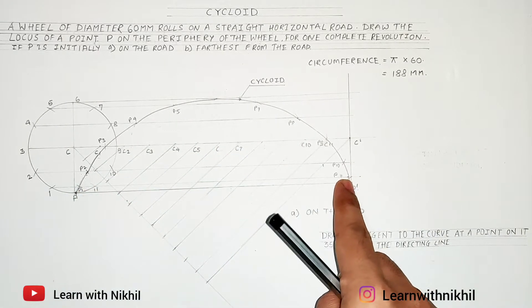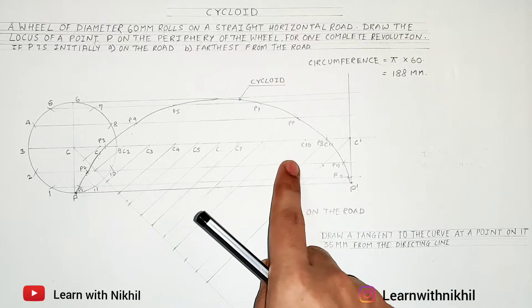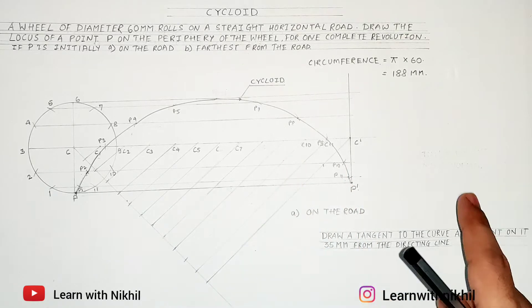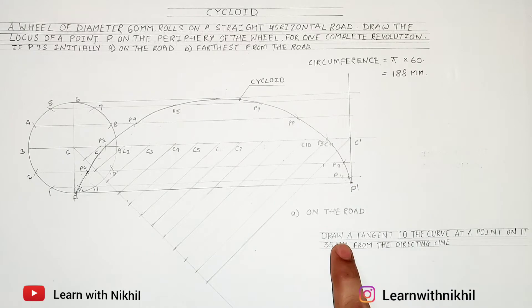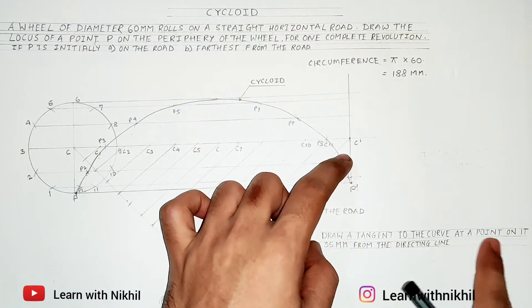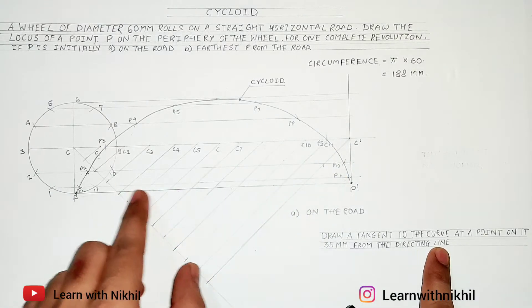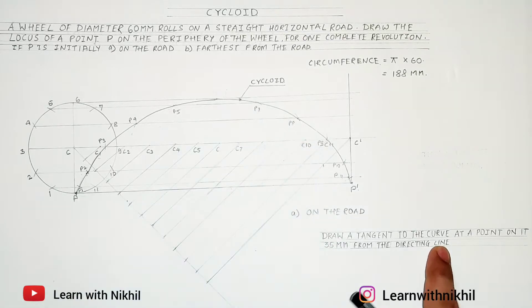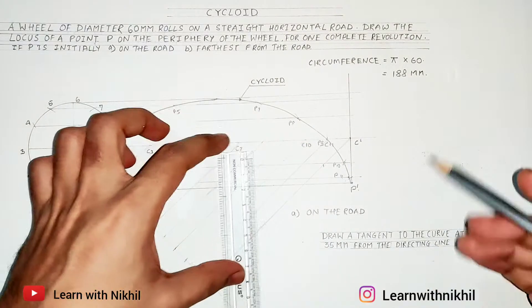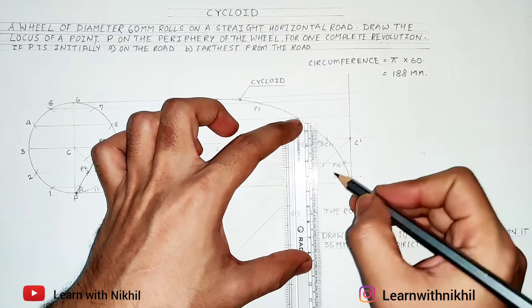The point is available on the road. Now we have to draw a tangent and the normal to this curve. You have to draw a tangent to the curve at a point on it 35 millimeter above the directing line. This is the directing line, this is the cycloid curve. We have to draw a tangent, so first step: